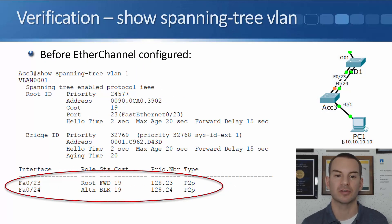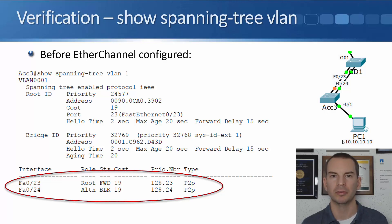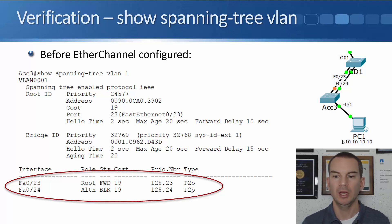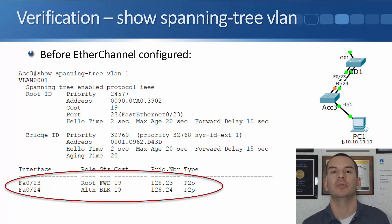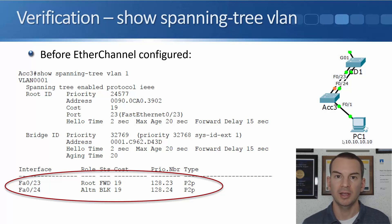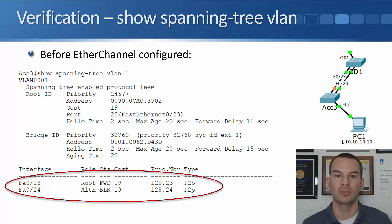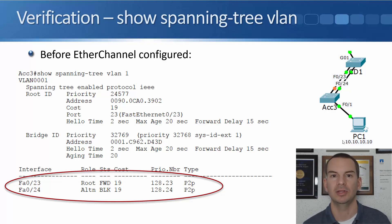'Show etherchannel summary' is the main verification command, but you can also run 'show etherchannel' for more verbose output. The last command to look at is 'show spanning-tree VLAN', because the reason for using EtherChannel is to avoid spanning tree shutting down some of your links. After configuring EtherChannel, you want to check that spanning tree is working as expected.